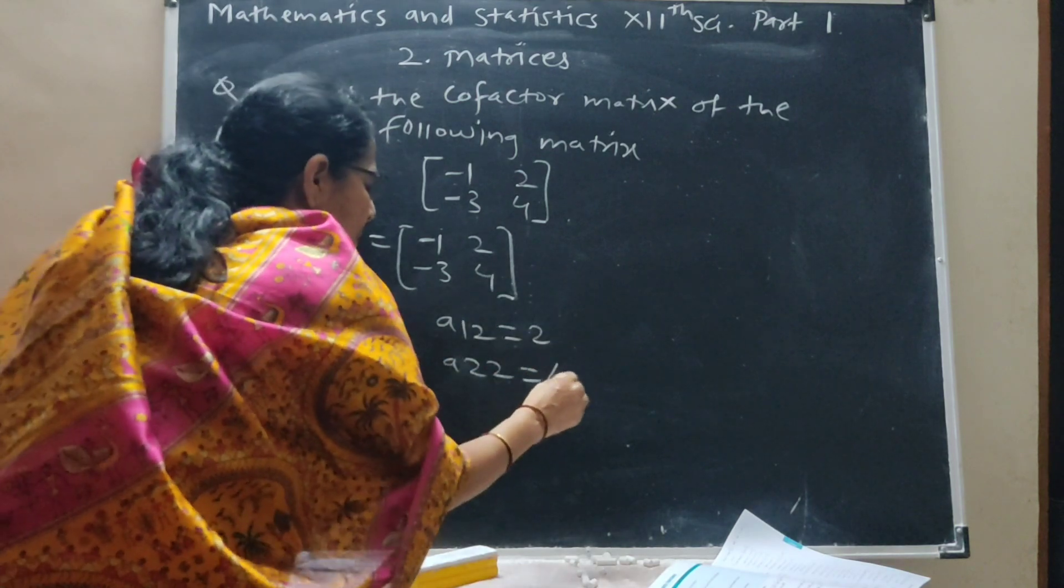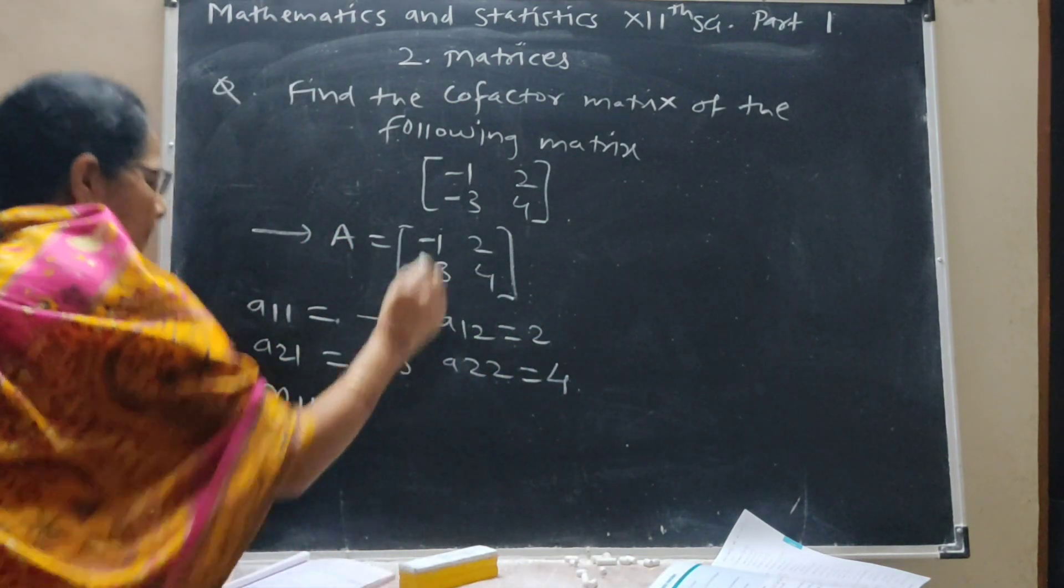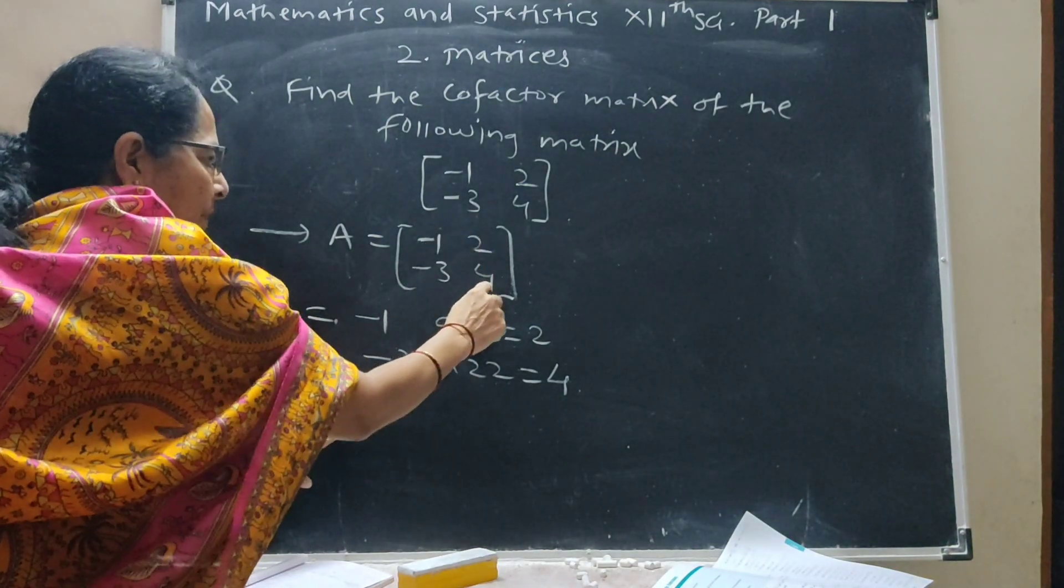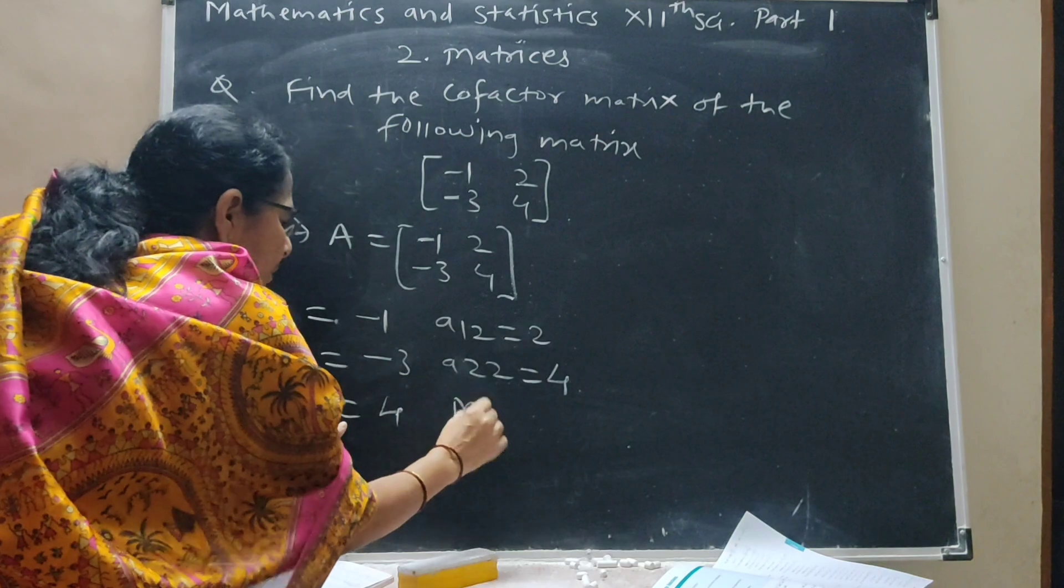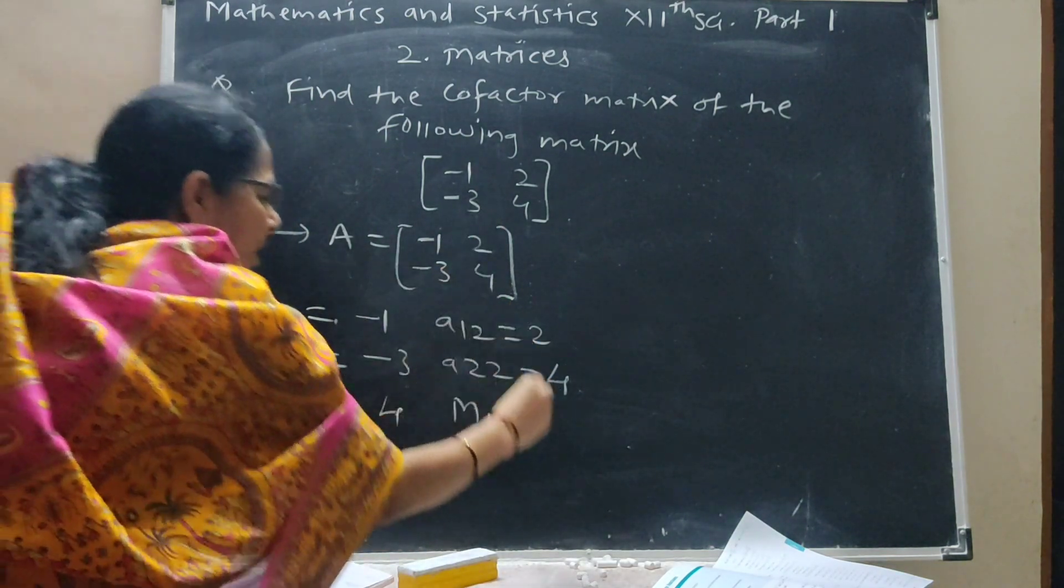Now minor M11, delete first row first column, this element is 4. M12, delete first row second column, this gives minus 2.